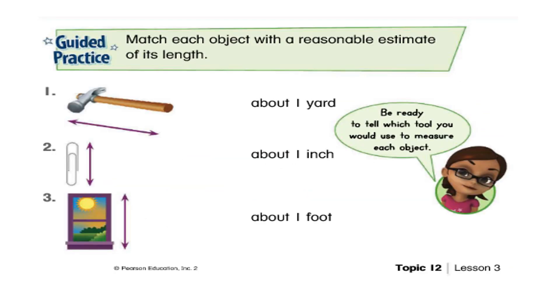Next page, you have to match each object with a reasonable estimate to its length. So, look at the objects. This is a hammer, a paper clip, and a window. So, here it's given about one yard, about one inch, and about one foot. So, just match the objects with their length. So, what about the hammer? What do you think? Is it one yard? Is it one inch? Or is it about one foot? Yes, very good. It's about one foot.